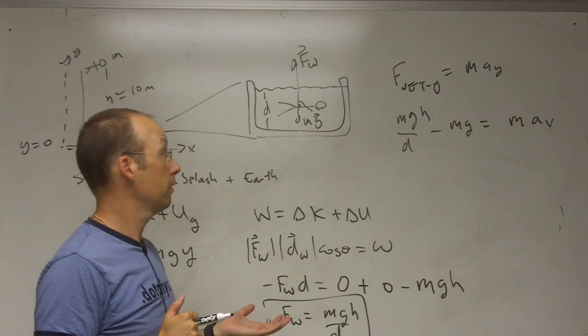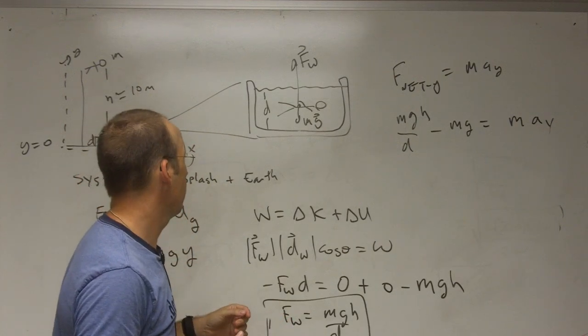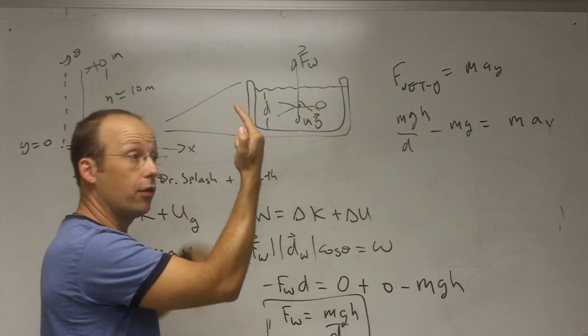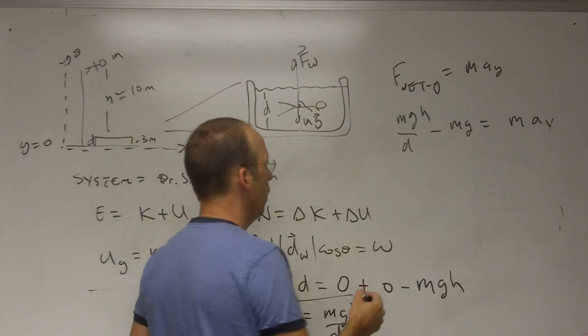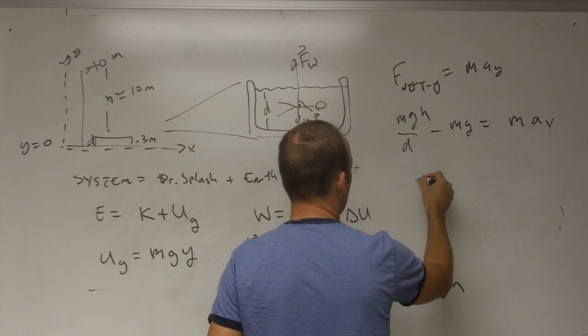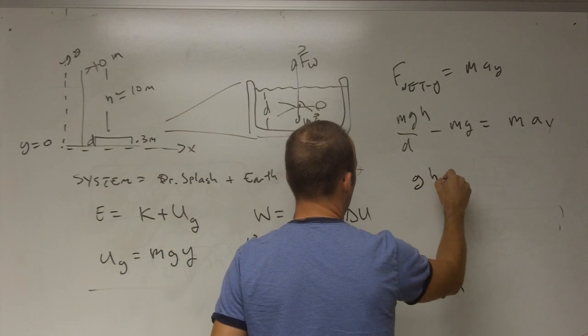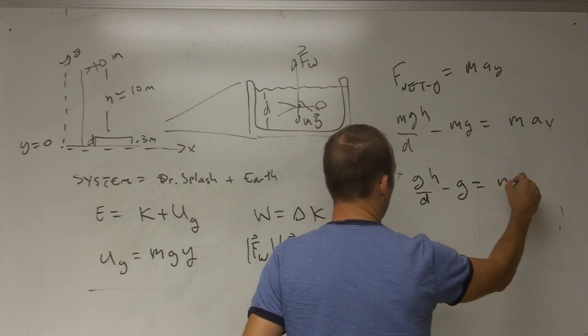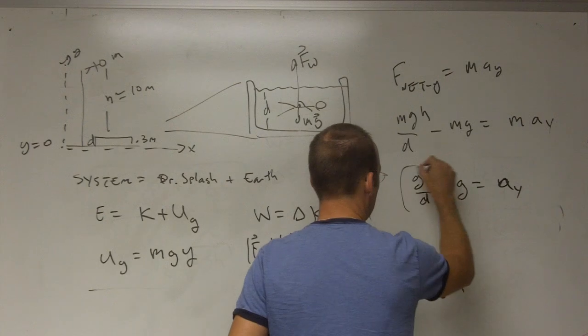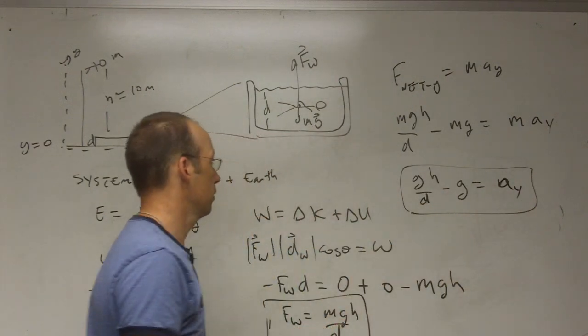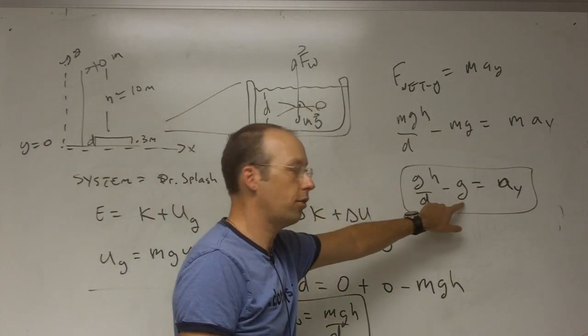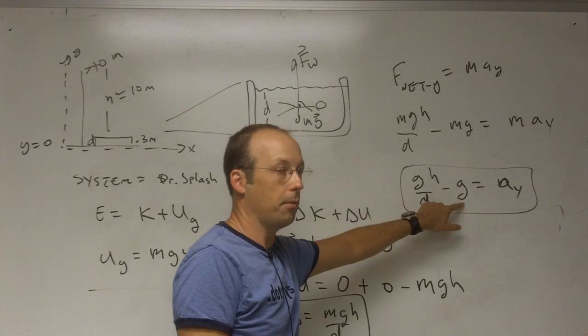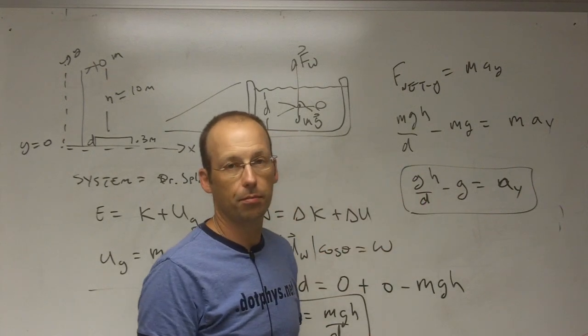AY should be positive, right? He is accelerating that way even though he's moving down. So the masses cancel. I get GH over D minus G equals AY. So this little term isn't going to do very much compared to these but let's just put in some values and see what we get.